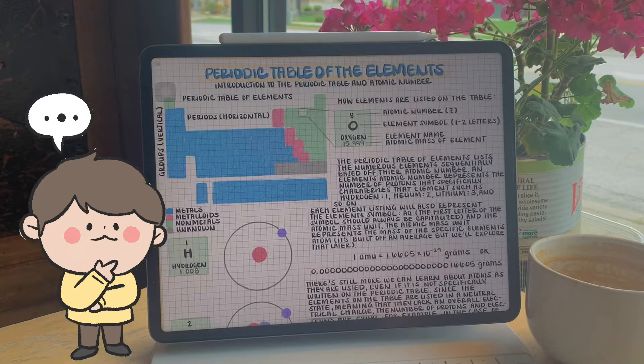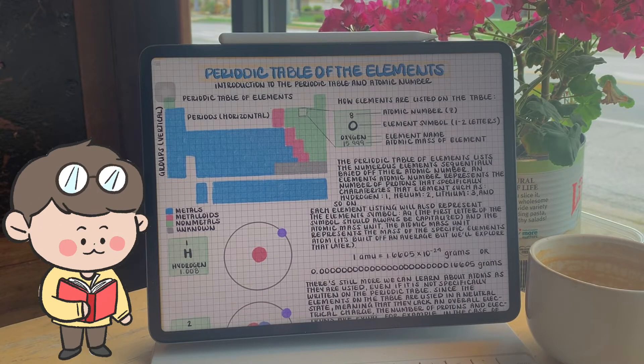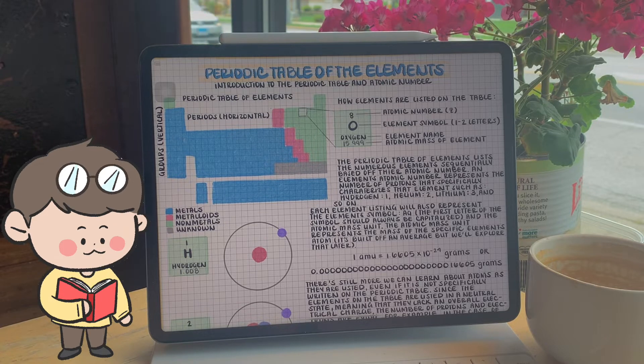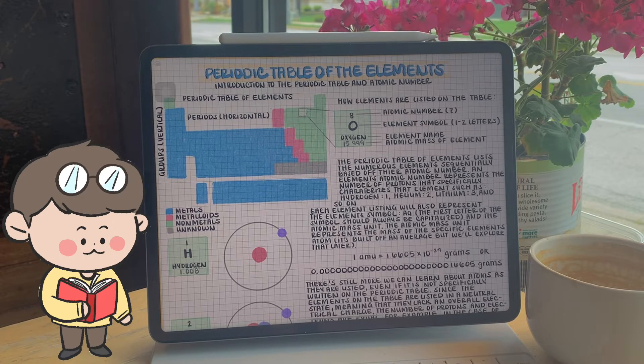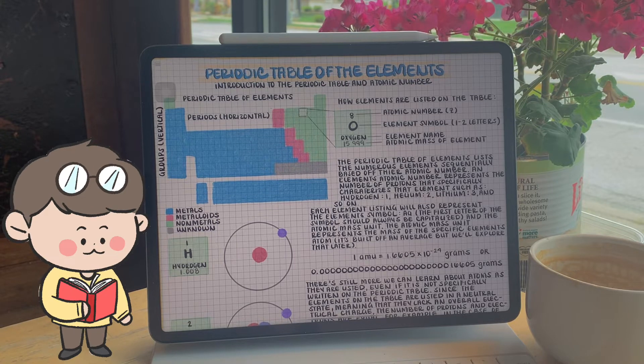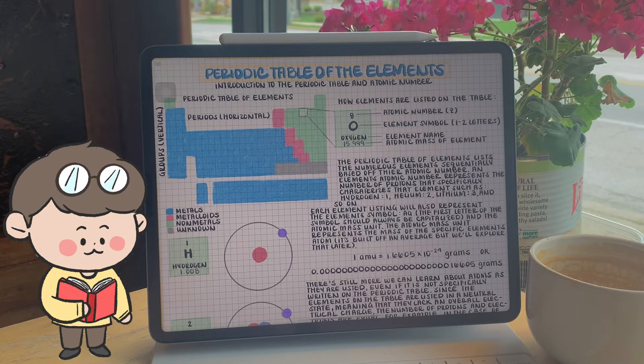The periodic table of elements lists the numerous elements sequentially based off their atomic number. An element's atomic number represents the number of protons that specifically characterize a specific element,